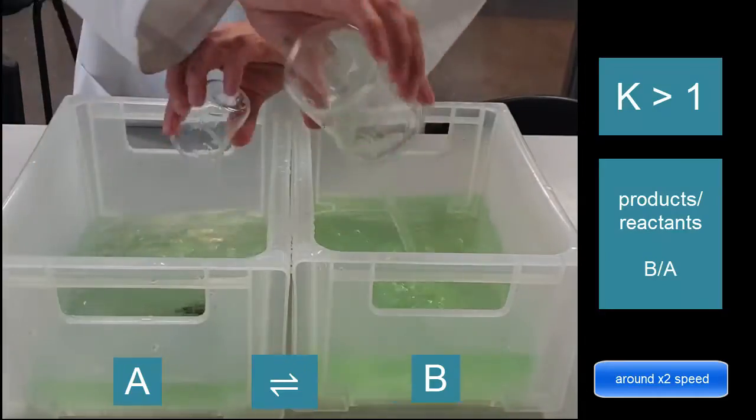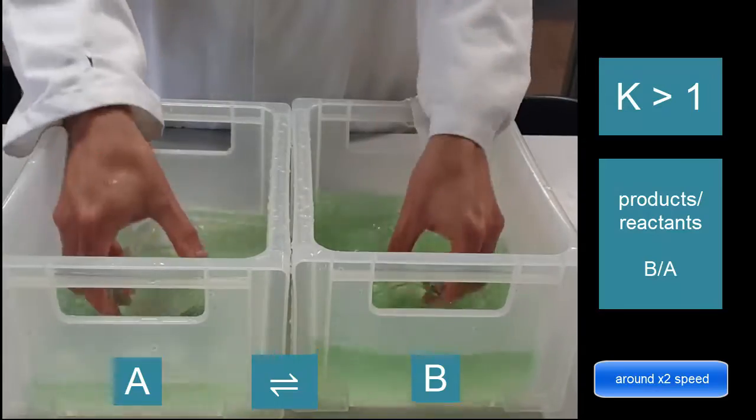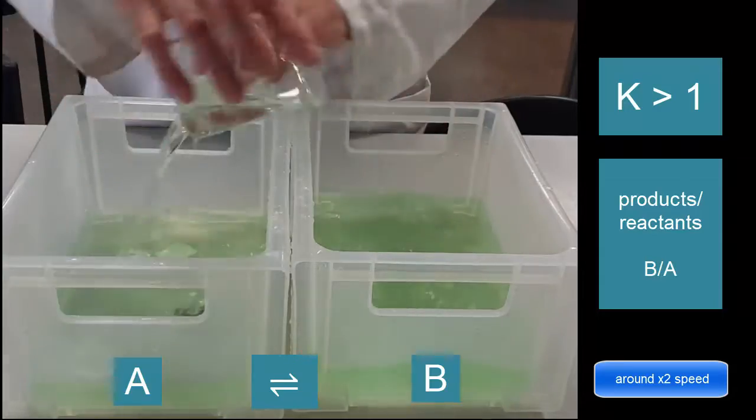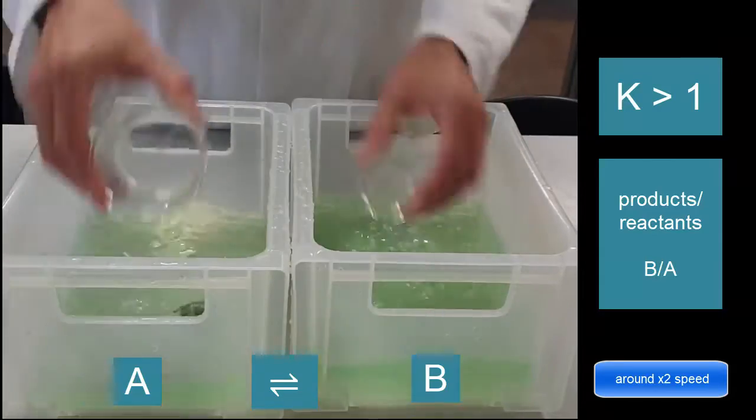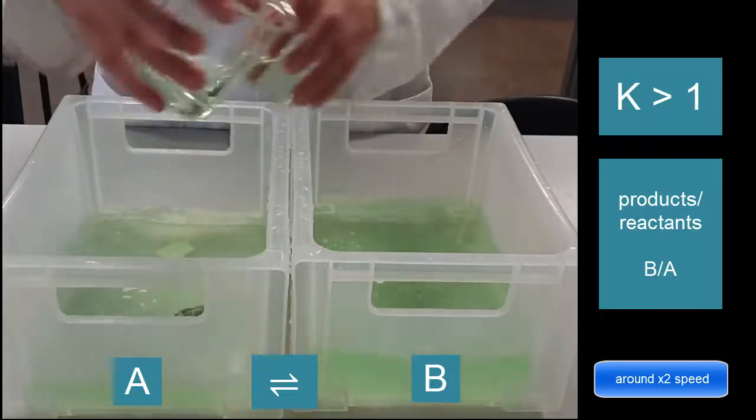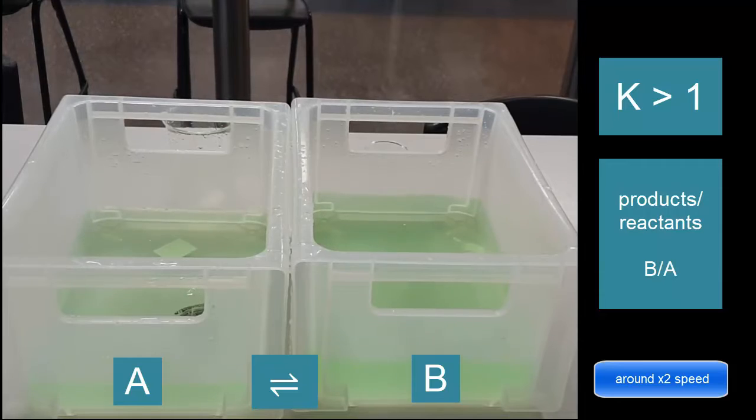So that's how equilibrium works. It reaches some sort of happy medium. You can see that the liquids in both sides are about the same. It reaches a situation where the concentrations of A and B are constant, and the forward and reverse reactions are happening at the same time.